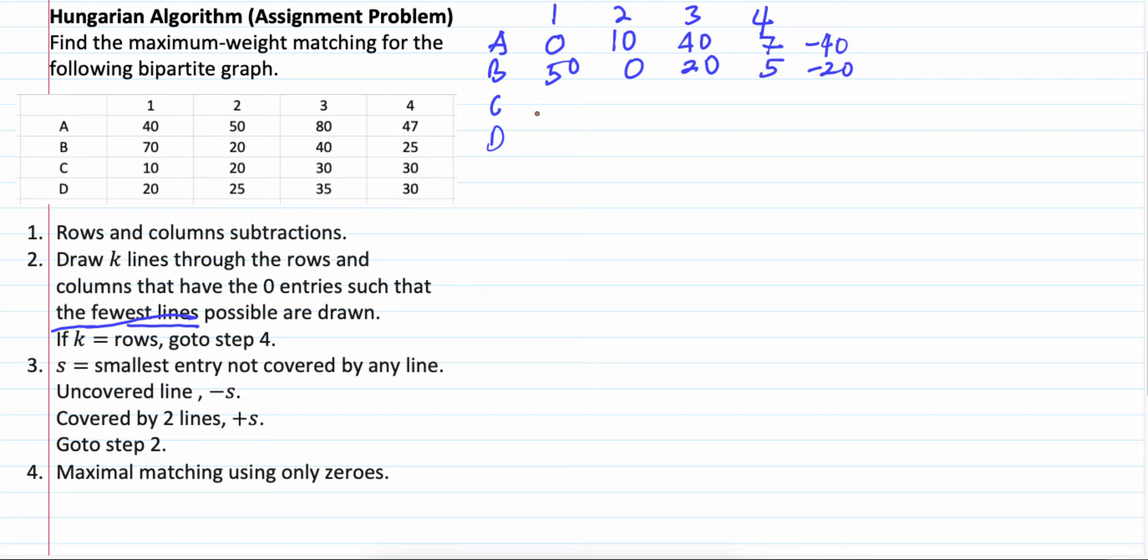Third row. The smallest one is 10. So, minus 10. 0. 20 minus 10 is 10. 30 minus 10 is 20. 30 minus 10 is 20. And, row D. The smallest one is 20. So, minus 20. 20 minus 20 is 0. 25 minus 25. 35 minus 20 is 15. 30 minus 20 is 10.